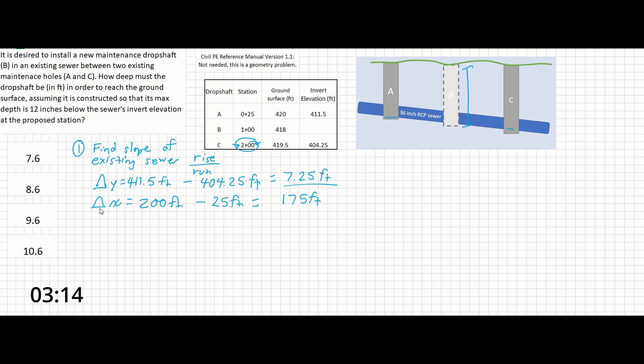Now if we were to divide 7.25, our delta Y, over our delta X of 175, we would get a slope of 0.414 feet per feet. And that's going to be the slope of our existing sewer.